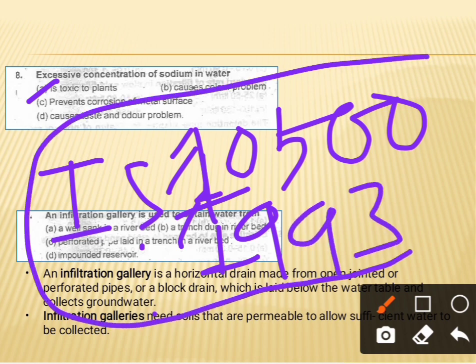The Indian Standard code IS 10500:1993 specifies the permissible limits for different elements and metals in drinking water.